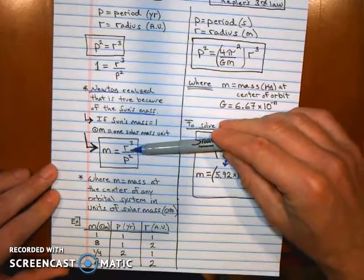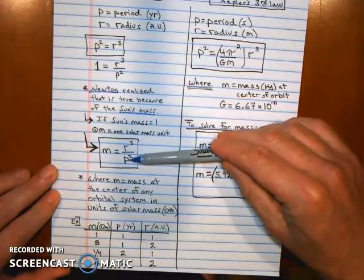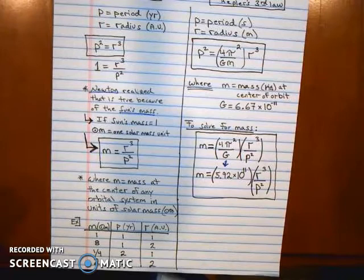And keep going. Let's say the radius is two, two astronomical units, and the period is two, well, two cubed over two squared would be eight over four, or two, so you get two solar mass star.